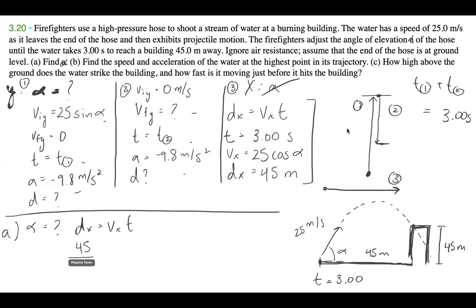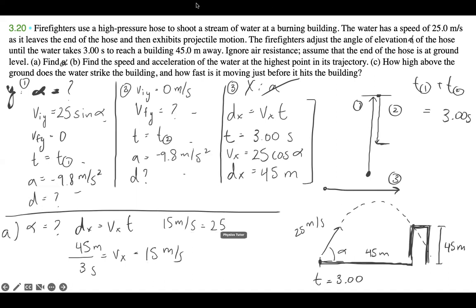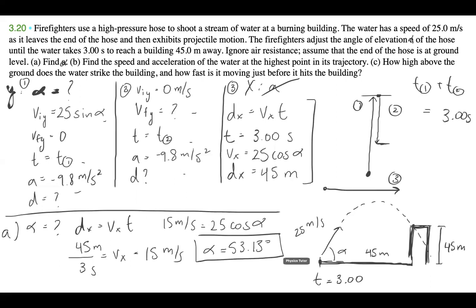We know that 15 meters per second equals 25 cosine alpha. Solving for alpha, we take the inverse cosine of 15 over 25, and we get alpha equals 53.13 degrees. So that's our answer for alpha.